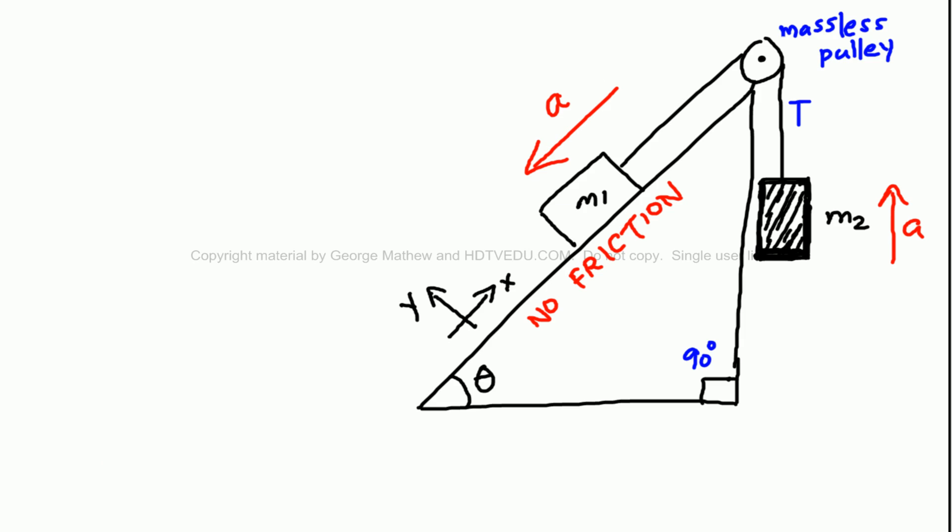Mass M1 is accelerating down the inclined plane — there is no friction — and mass M2 accelerates up. Whenever we see non-zero masses, we isolate those masses and then look at the forces acting on them.